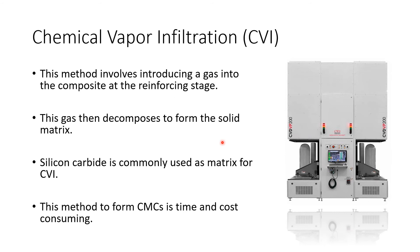Chemical vapor infiltration (CVI) involves introducing a gas into your composite at the reinforcing stage. That gas decomposes to form the solid matrix. Silicon carbide is a common chemical used as the matrix for CVI. This method is time-consuming and costly because the equipment is expensive, but it's a good method — you just need to control the gas and its decomposition.